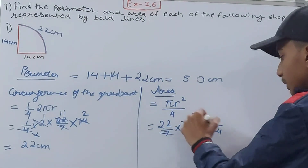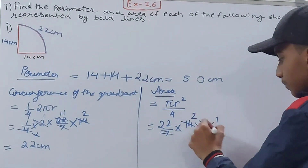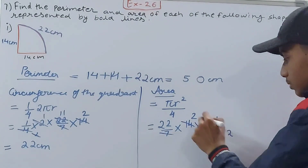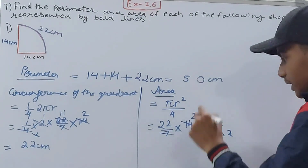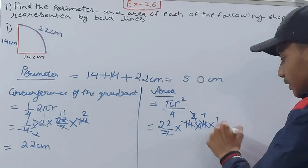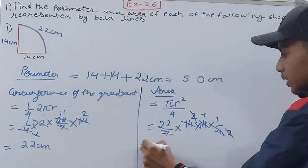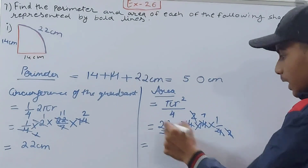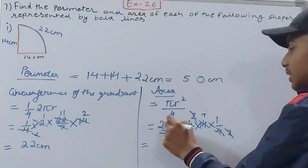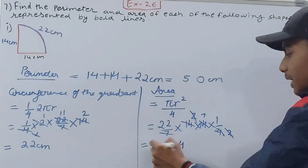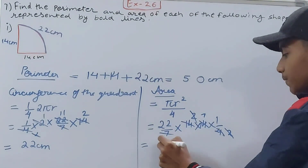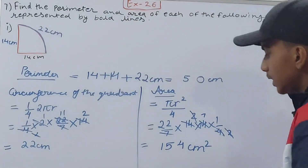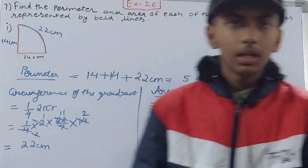Continuing the cancellation: 14 goes 2 times, that goes 7 times, and the 2 and 2 cancel. So 7 × 2 = 14, and 11 × 14 = 154 square centimeters. That is the area of the quadrant.